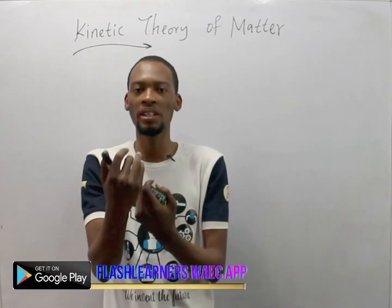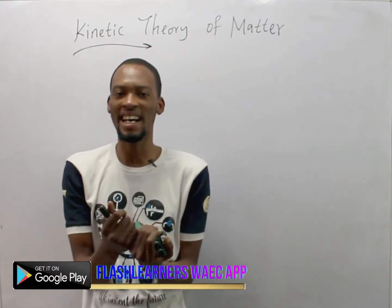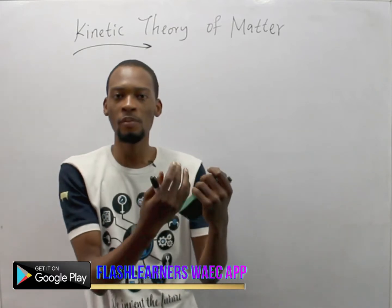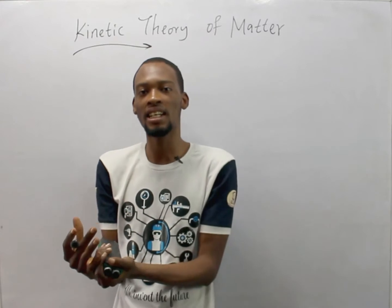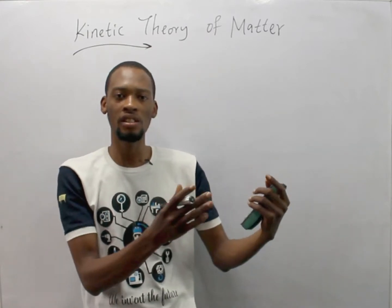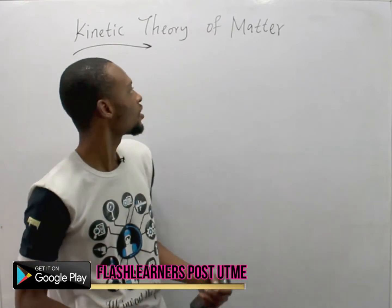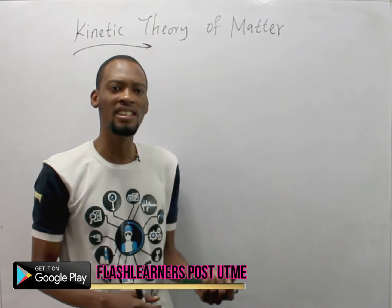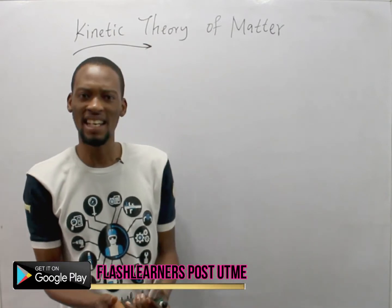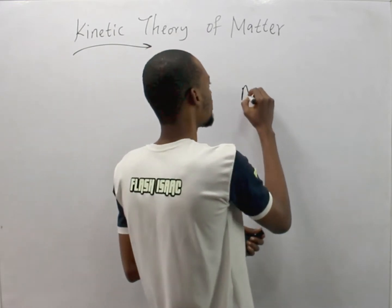Kinetic theory of matter falls under the particle nature of matter. Particle nature of matter states that matter exists as particles. There is another nature of matter you will learn later — that's the wave nature of matter, where you'll be seeing the photoelectric effect, Compton effect, and so on. Now, kinetic theory of matter — what does it state?